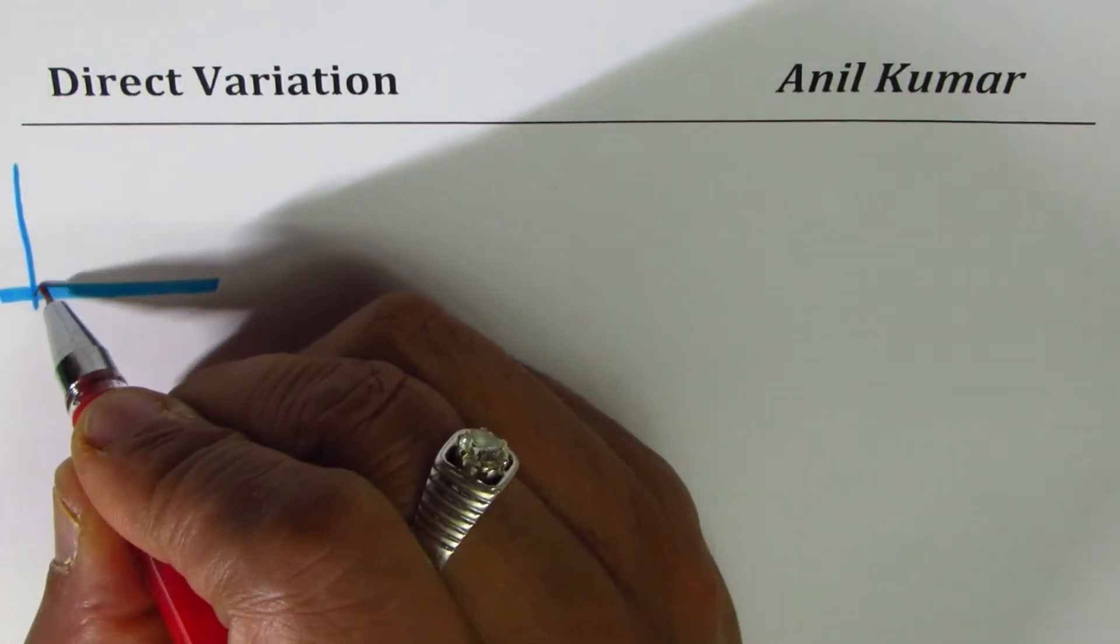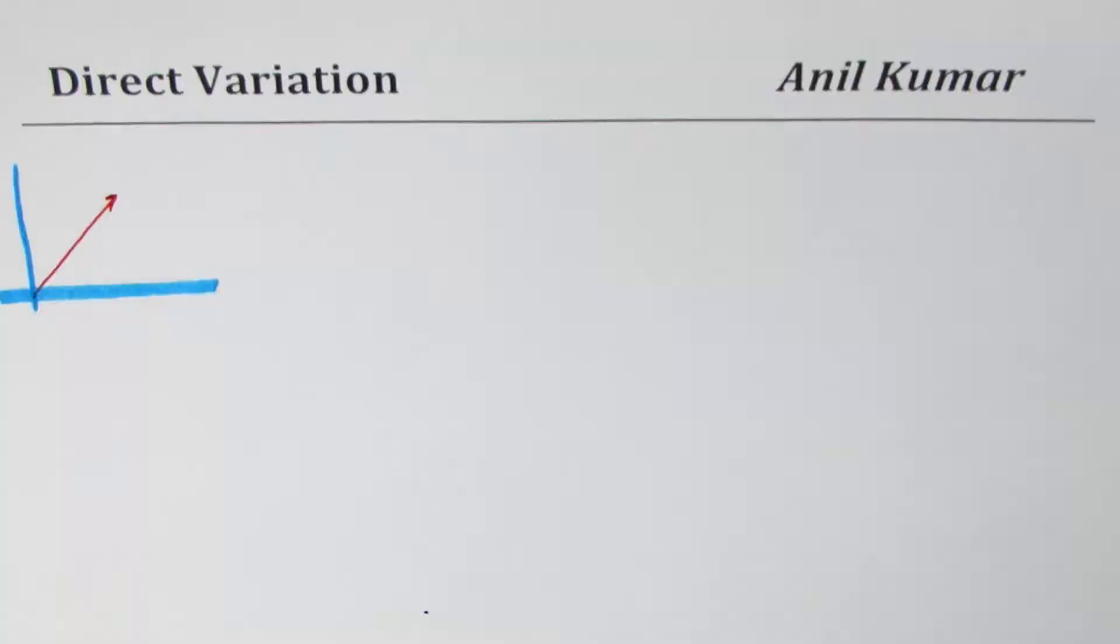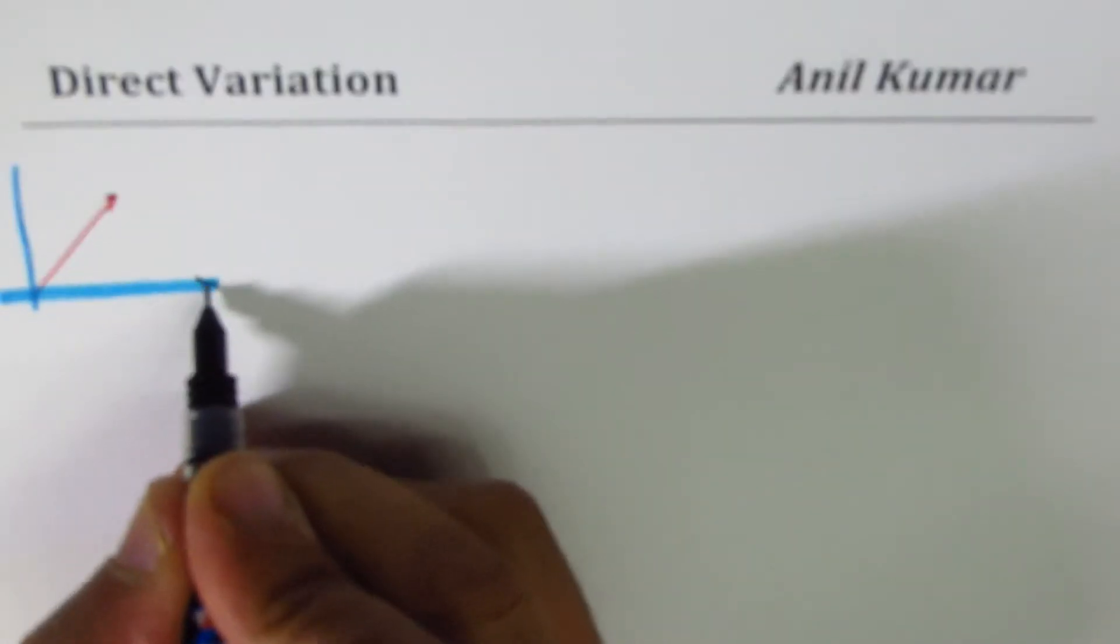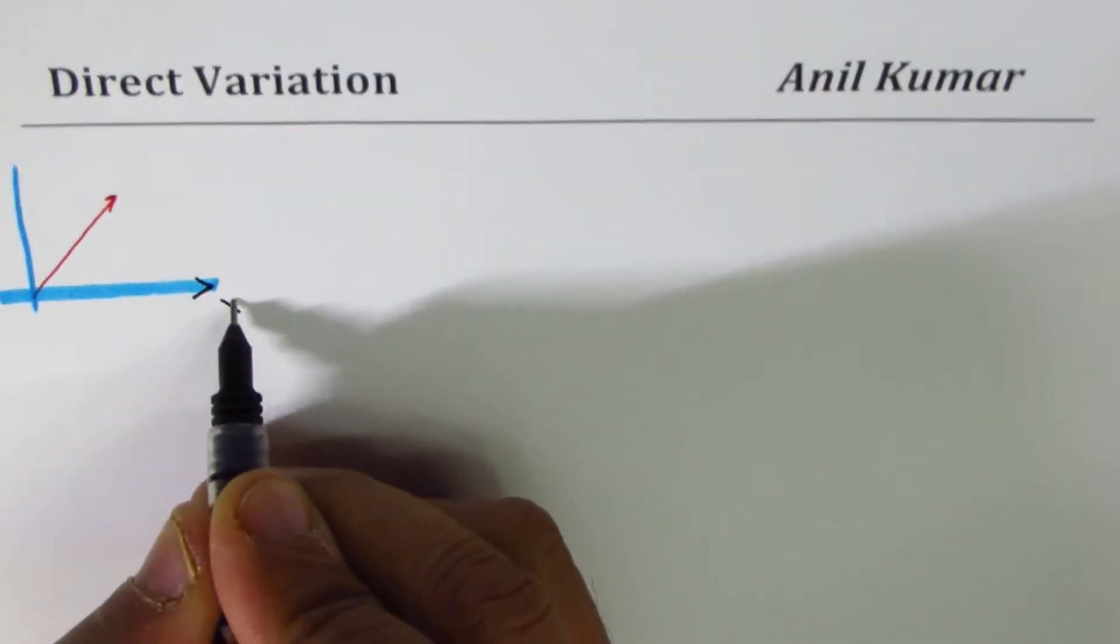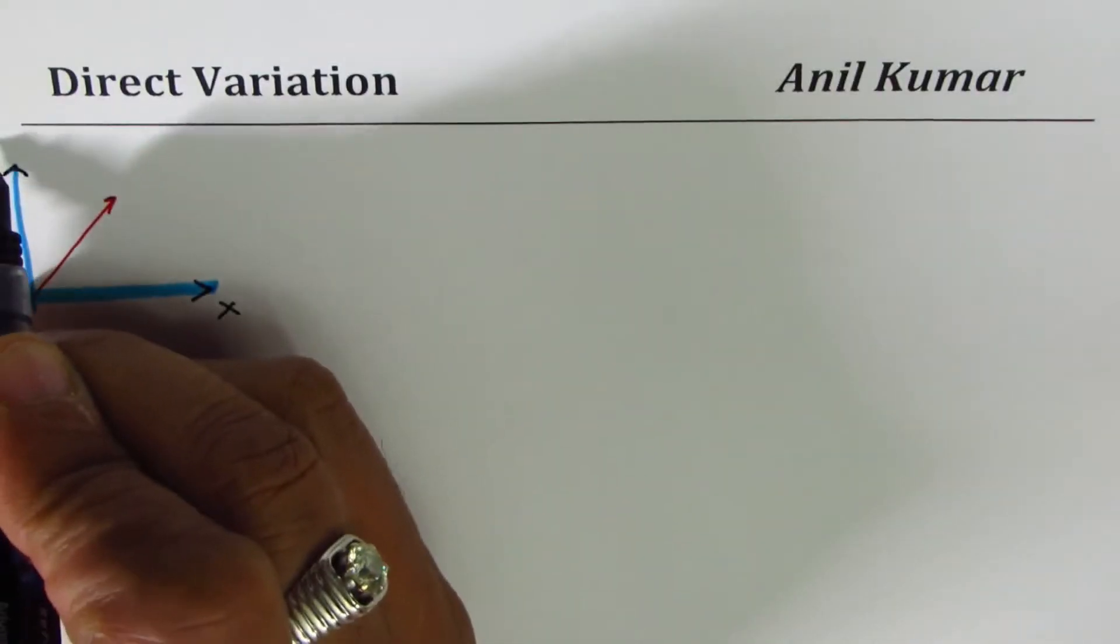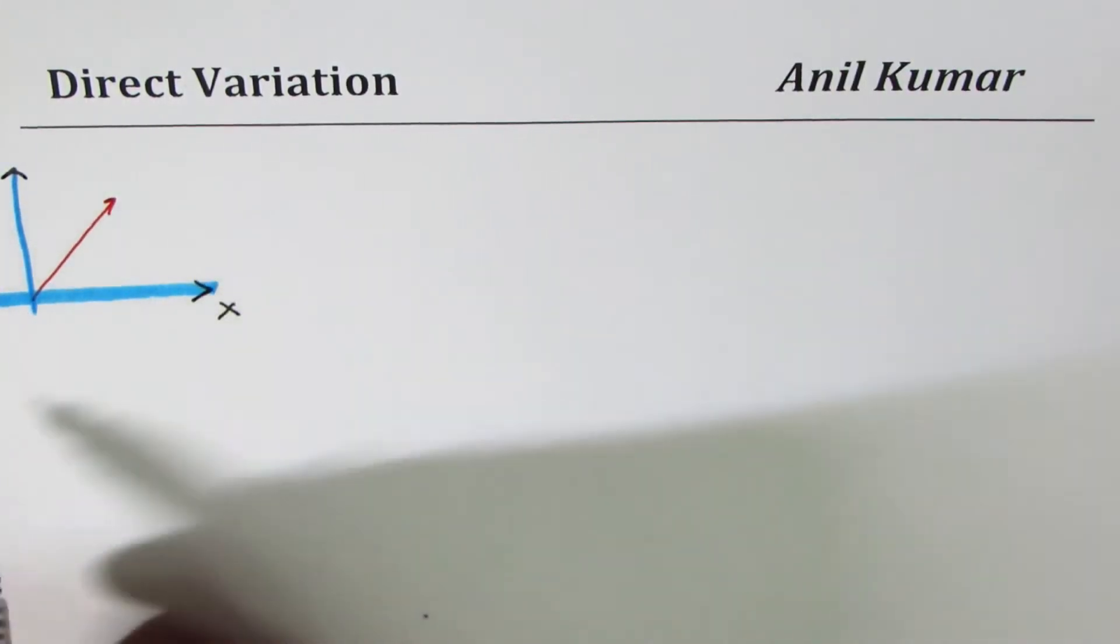A straight line going through the origin represents direct variation. Normally when we draw a graph we represent independent variable x along the x-axis and the dependent variable y along the y-axis.